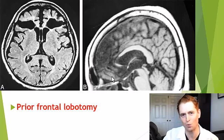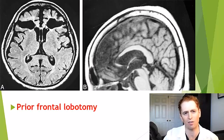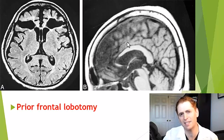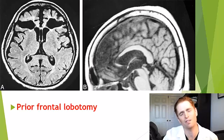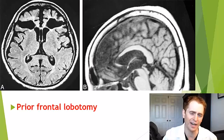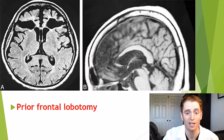If you couldn't get this last one, don't fault yourself — there isn't really a disease that causes these unusual, symmetrical areas of gliosis in the bilateral frontal lobes. This is actually caused by humans who used to perform frontal lobotomies to treat psychiatric disease. Lobotomy did work in treating agitation, but led to terrible personality changes, mood changes, dementia, and often progressive symptoms down the line.